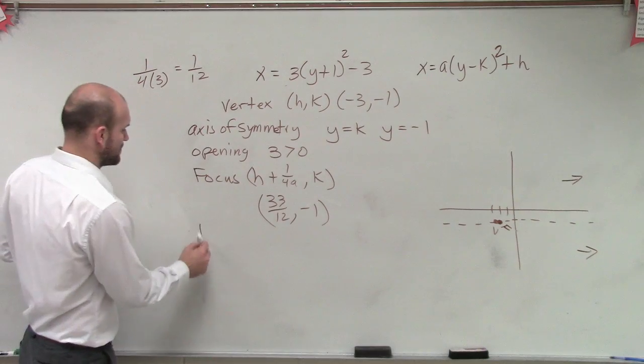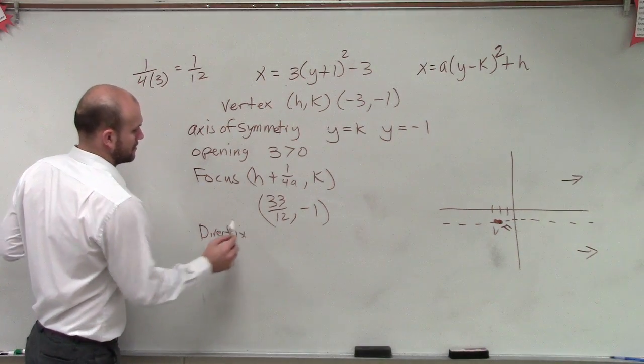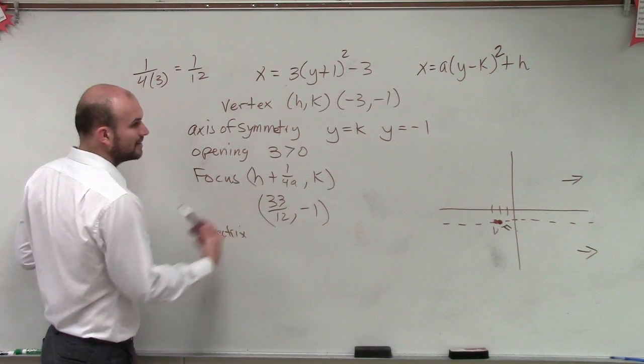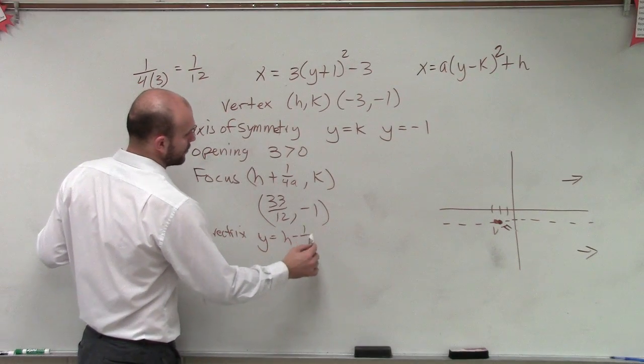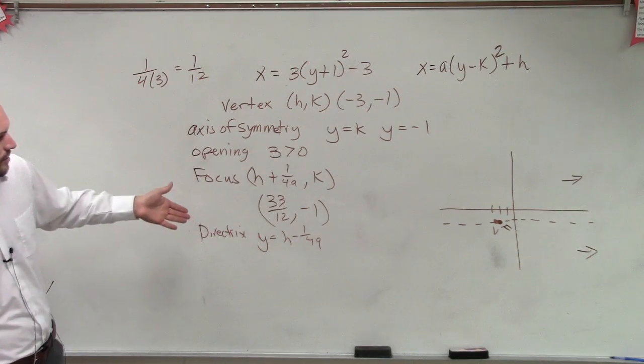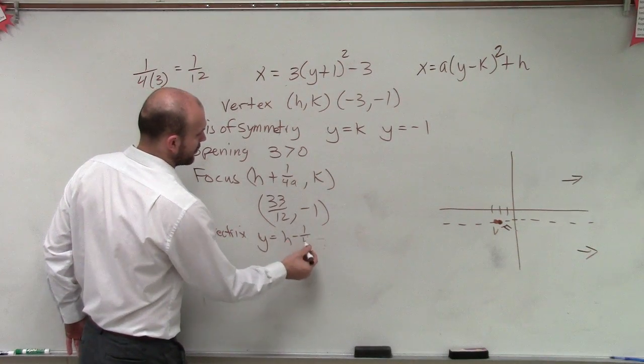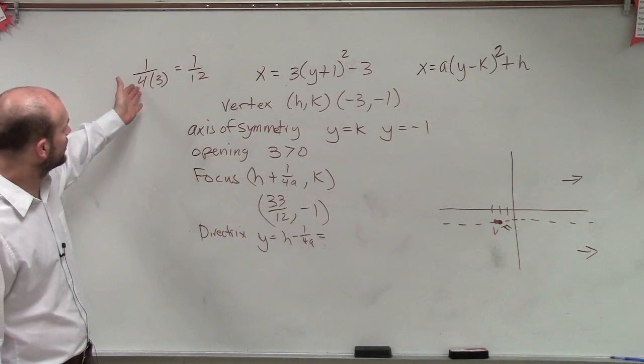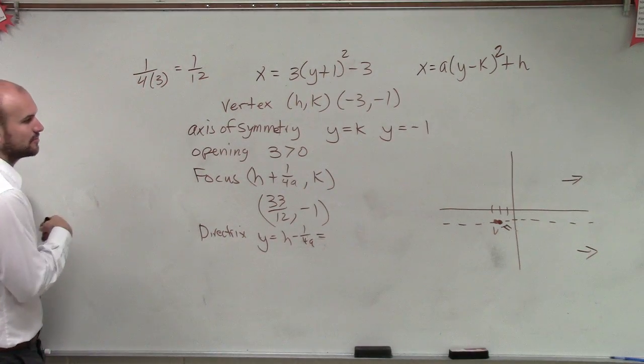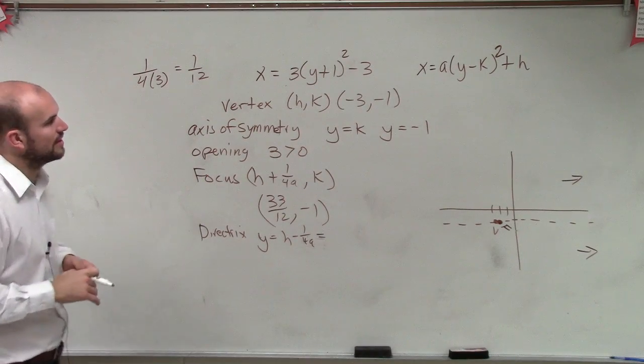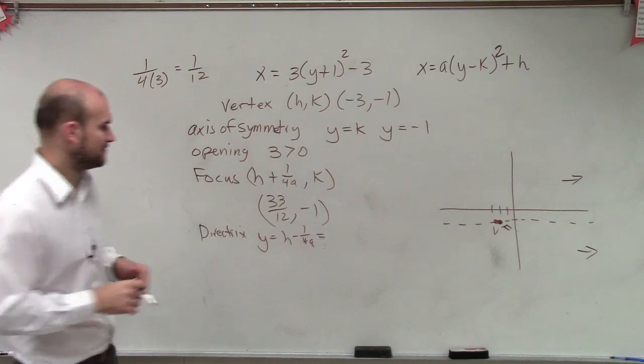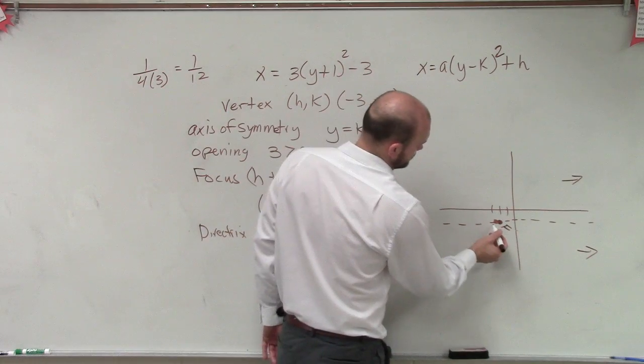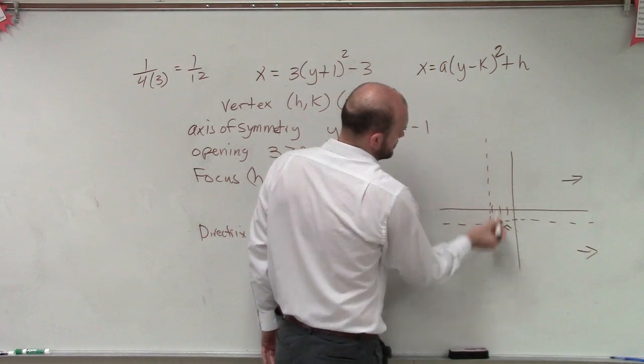And your directrix is now going to be the same thing. But now it's going to be x equals h minus 1 over 4a, which is going to be equal, 1 over 4a is 1/12th. So therefore, I'm sorry, minus 1/12th, so you're going to have negative 3 minus 1/12th. So that would be negative 39 over 12. So that's your directrix.